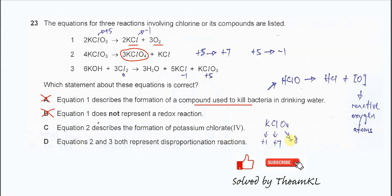Potassium is positive 1, so chlorine is positive 7. Therefore, it's not potassium chlorate 4, it should be chlorate 7. So that's why C is also wrong.